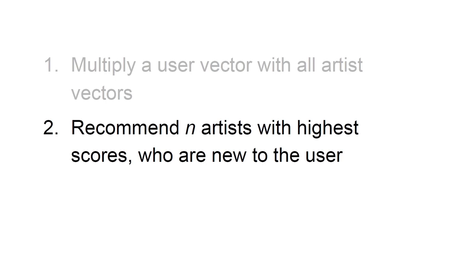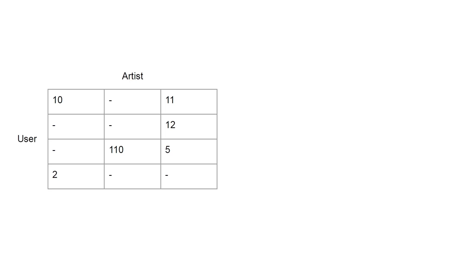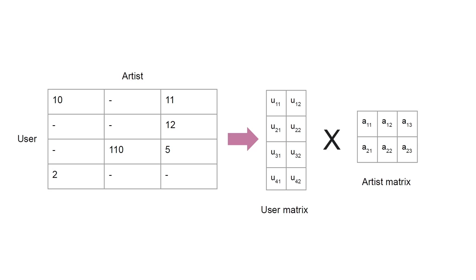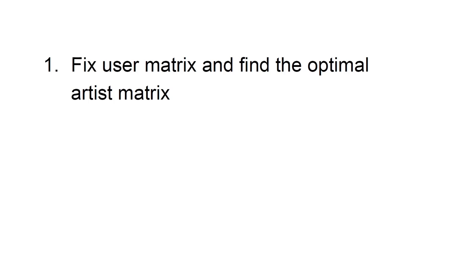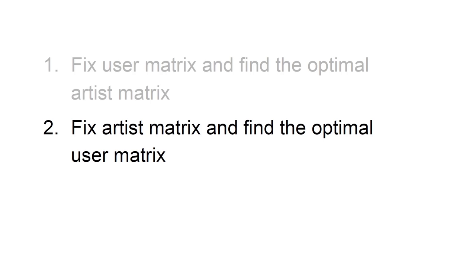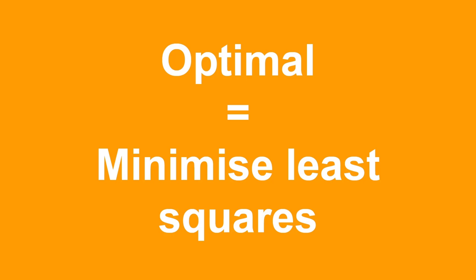There's still a key question: how do we go from the user-artist matrix to the two decomposed matrices — the user matrix and artist matrix? That's where alternating least squares comes in. ALS repeats two steps again and again, alternating between them. First, we fix the user matrix and find the optimal artist matrix; then we fix the artist matrix and find the optimal user matrix. The term 'least squares' refers to what 'optimal' means in these steps — it means minimizing the least squares error.